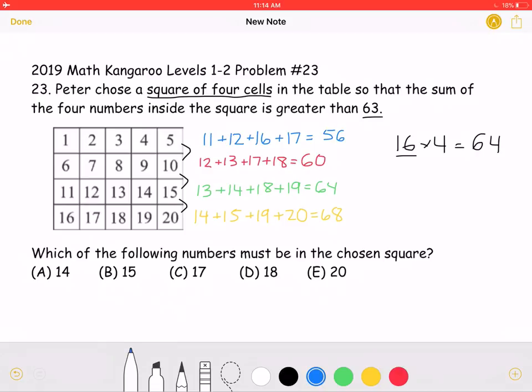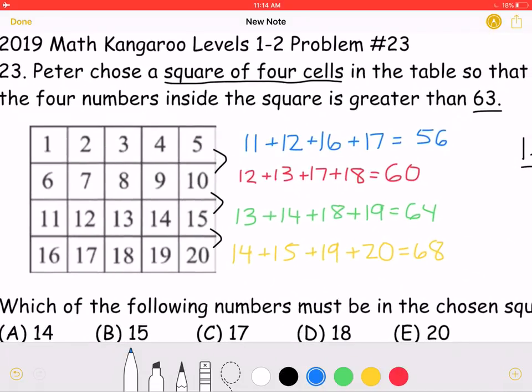So, let's start with the first square that we can make in the last two rows. If we add the numbers in this square, 11 plus 12 plus 16 plus 17, we will get 56.